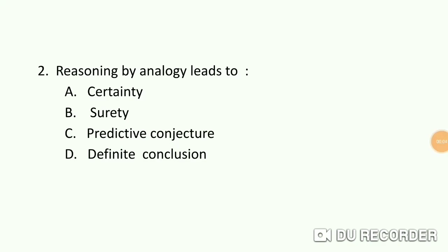Question number two. Reasoning by analogy leads to: option A) certainty, B) surety, C) predictive conjecture, and D) definite conclusion. The answer is C, that is predictive conjecture. It was very clear from the question — reasoning by analogy.